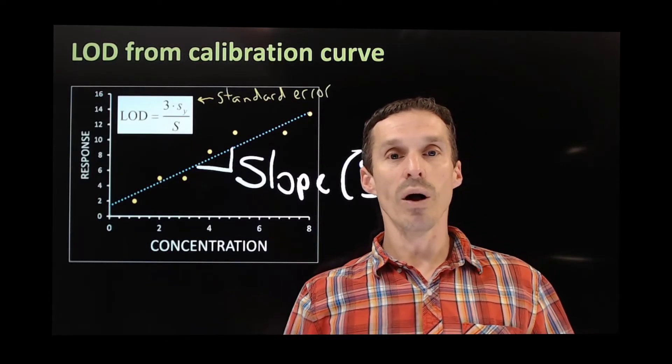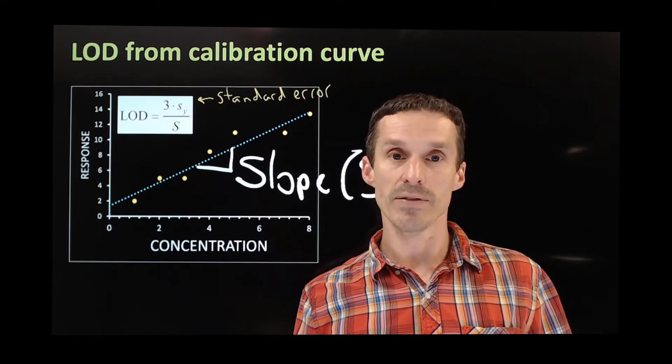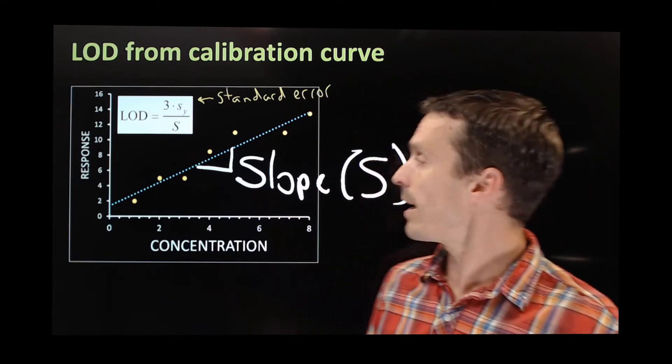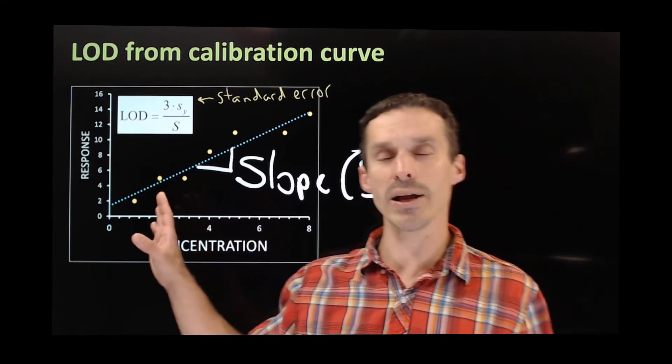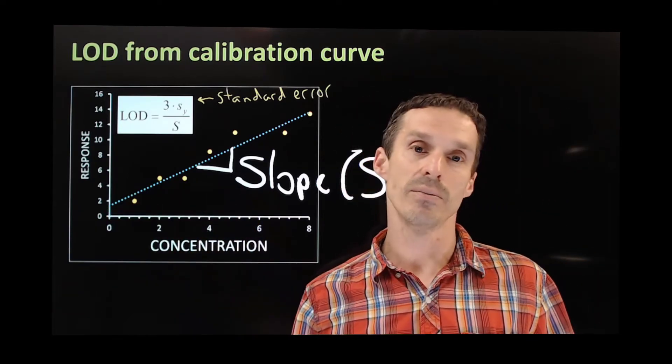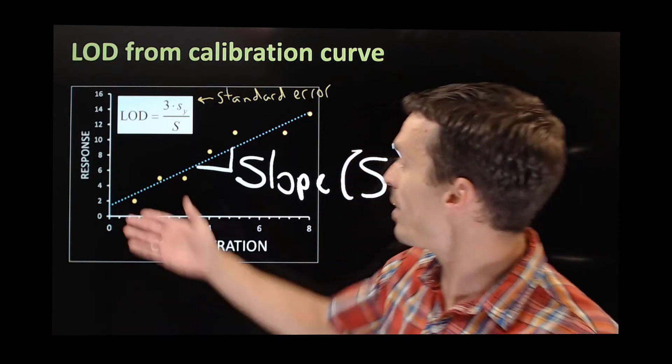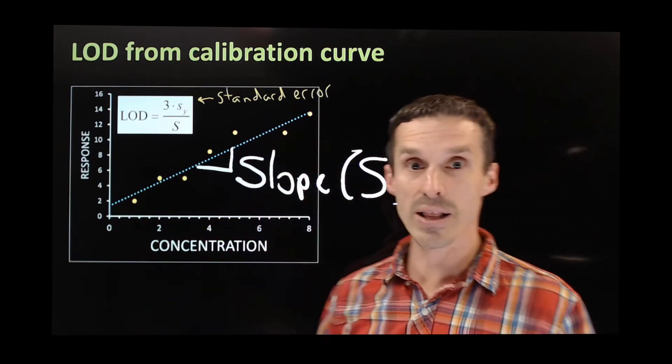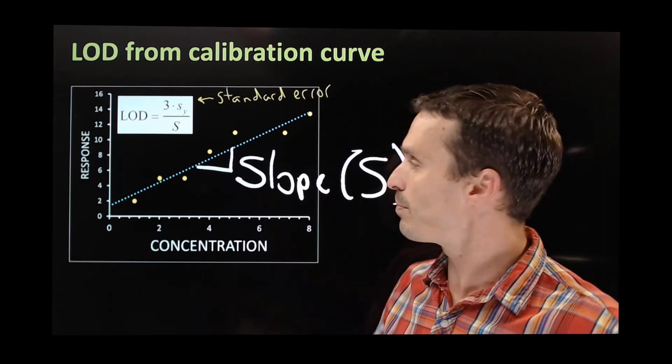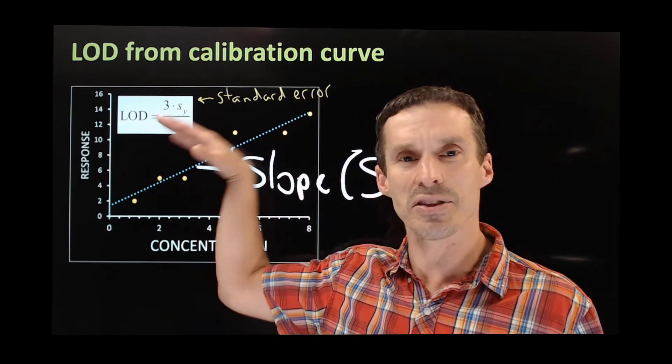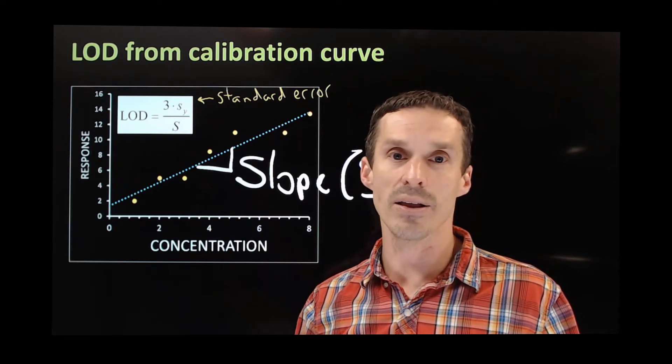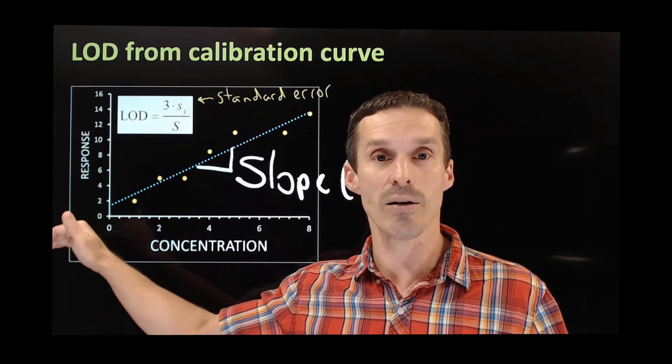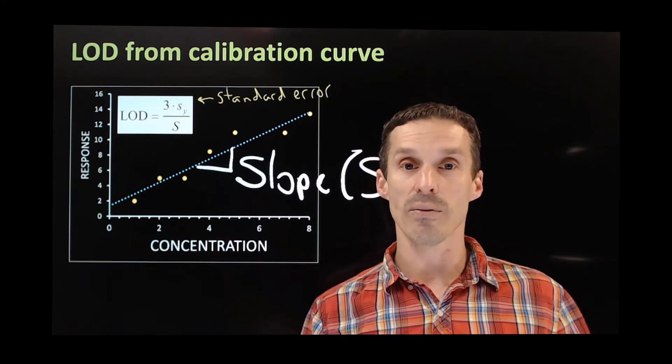Now that's actually just one way of computing a limit of detection. You can also calculate a limit of detection from a calibration curve. So what we're looking at here actually relates to the regression component of this class. We have a calibration curve, and in our calibration curve we've determined the trend line and the trend line is fit, but not perfectly. You see that there's some error, there's some scatter in that. What you can do is extrapolate how low we can work our way down before we no longer have a reliable signal.